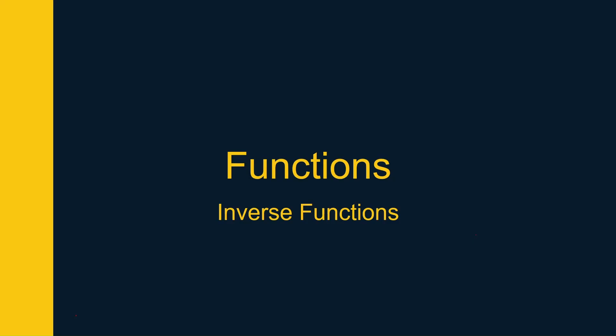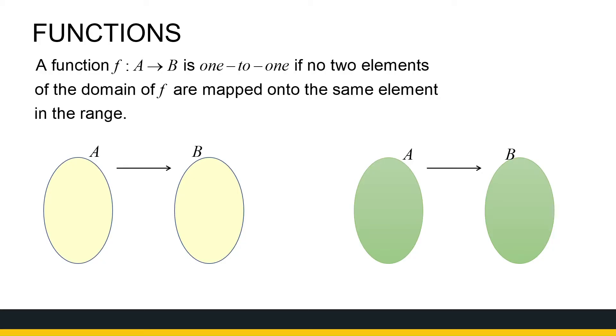When looking at inverse functions, the first thing we need to remind ourselves of is what a function is. A function is a rule that assigns to each element of the domain a unique element of the range. Before we can look at inverse functions, we have to define what we mean by a one-to-one function. A function is one-to-one if no two elements of the domain are mapped onto the same element of the range.